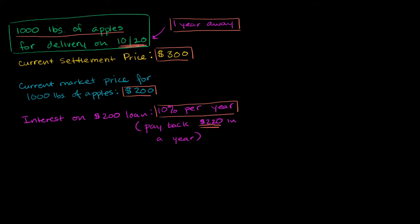And what we can do is, we can borrow $200. Let me list it all out. We can borrow $200 and then use that $200 to buy 1,000 pounds of apples. So then we buy 1,000 pounds of apples. We keep them in our garage or someplace like that.